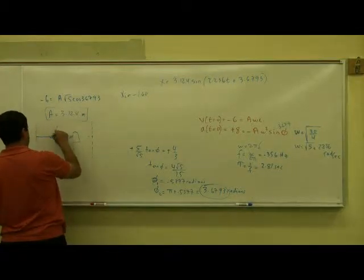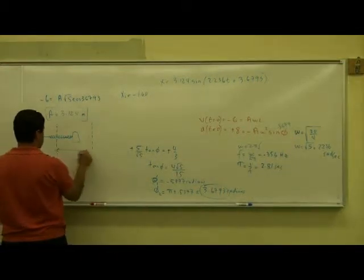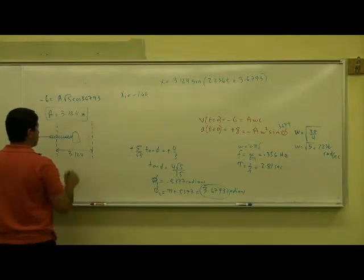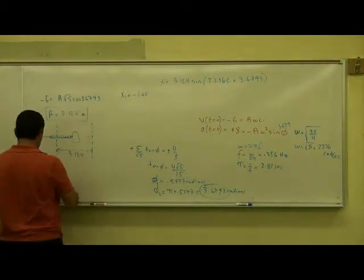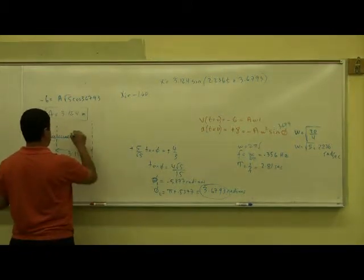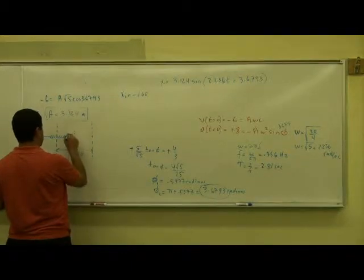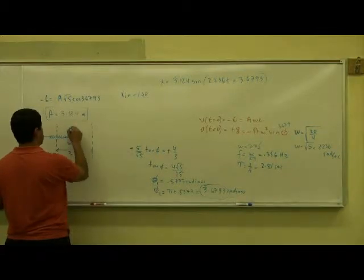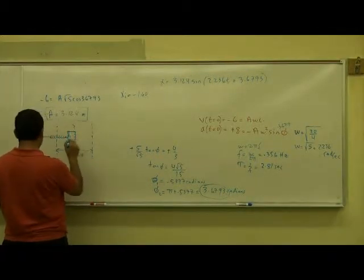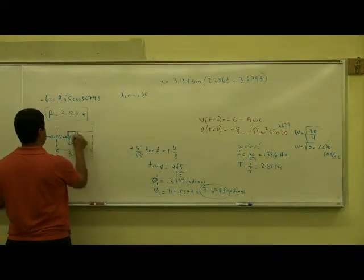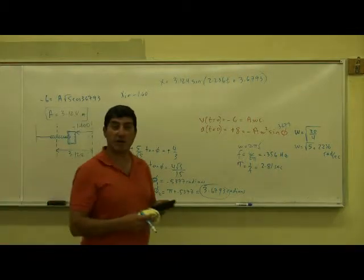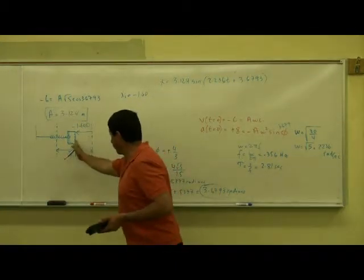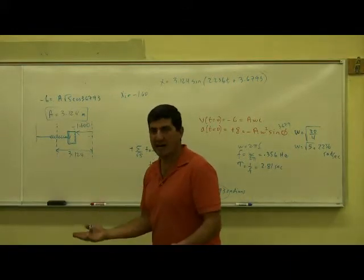Let's say here's my amplitude, the most amplitude, 3.124. The initial position is a little bit more than halfway to that distance. If this is halfway, a little bit more than halfway. If this is 0.5, this is 1.60 right here. Negative 1.600. That's my initial position of the block and so we are confirmed that it's to the left of the equilibrium and it's moving to the left so it's slowing down.